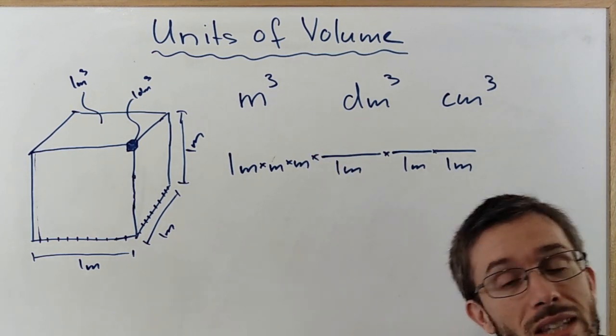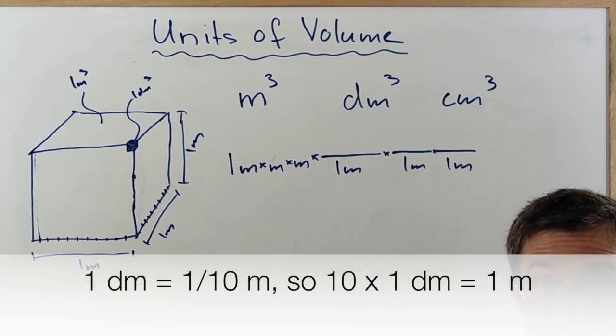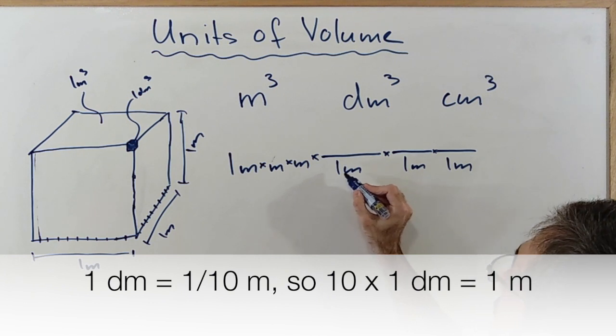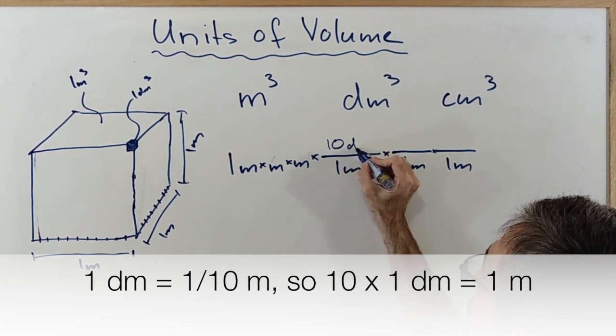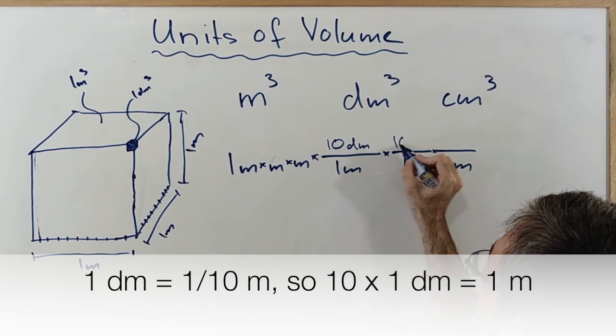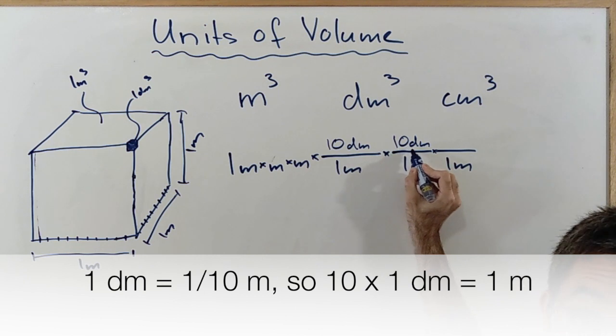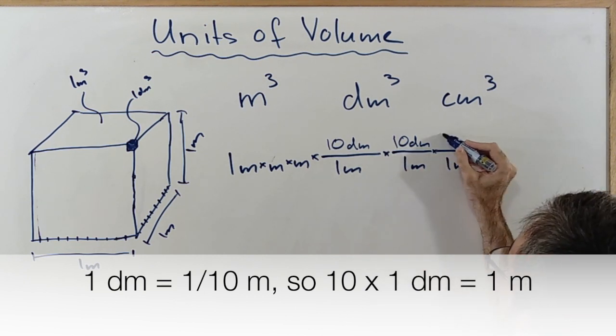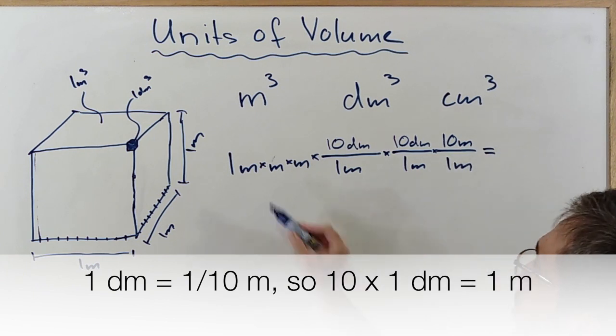So a decimeter, deci meaning one tenth, like dix in French, meaning I have 10 decimeters in one meter. Ten times one tenth gives me the meter. So if I multiply this,